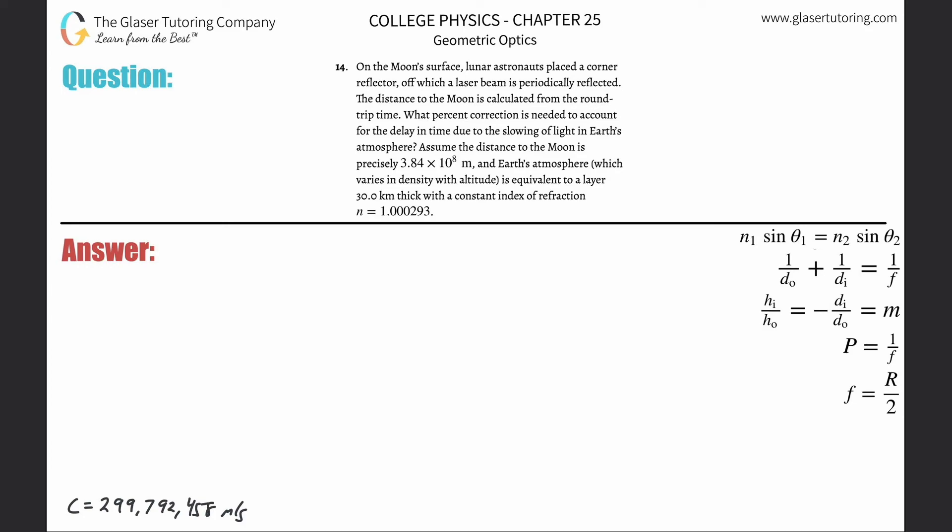Problem 14: on the Moon's surface, lunar astronauts placed a corner reflector off which a laser beam is periodically reflected. The distance to the Moon is calculated from the round-trip time. What percent correction is needed to account for the delay in time due to the slowing of light in Earth's atmosphere? Assume the distance is 3.84×10⁸ m and Earth's atmosphere is equivalent to a layer 30 kilometers thick with a given index of refraction.